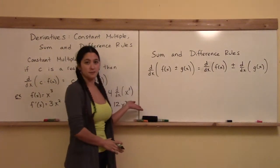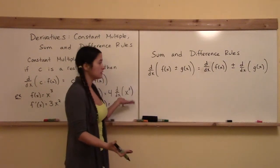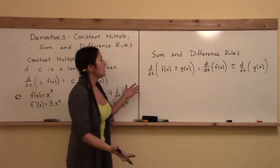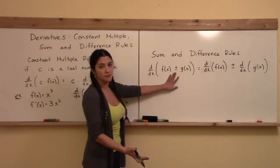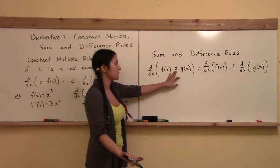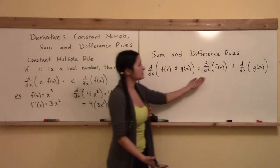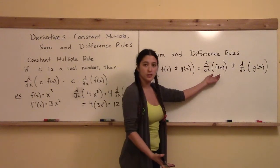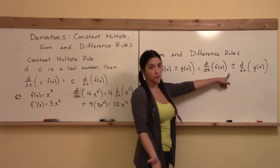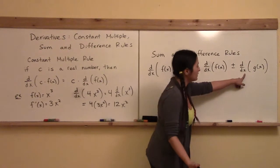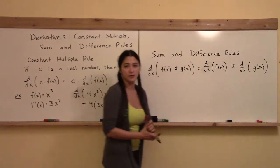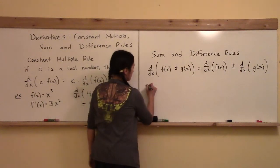Now, let's go into the sum and difference rules. I've written them in combination because they're pretty much the same rule. If you have the sum or difference of two functions and you want to take the derivative, that's going to be the derivative of the first function plus or minus the derivative of the second function. Let's see a quick example.